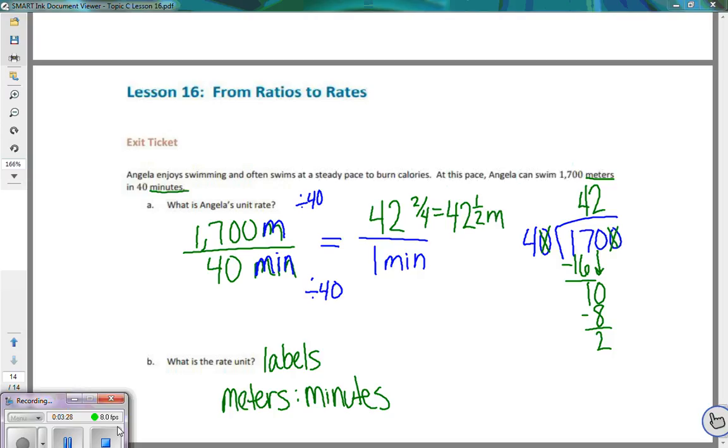So to find your unit rate, you compare it to one. To get the unit rate, you take the top portion of your rate, 1,700, and divide it by 40, the bottom part of your rate. 1,700 divided by 40 gives you 42 and a half to one minute.